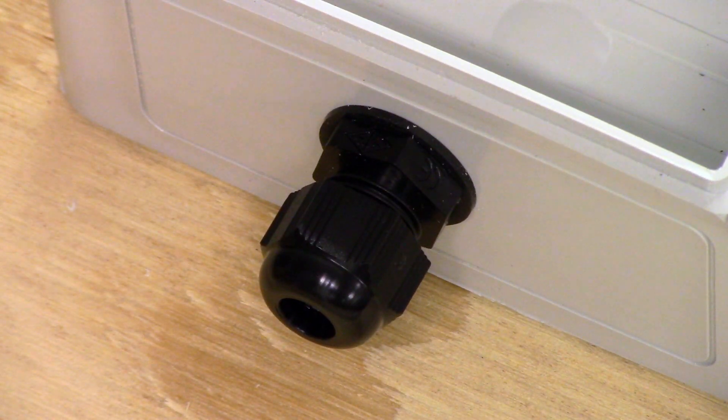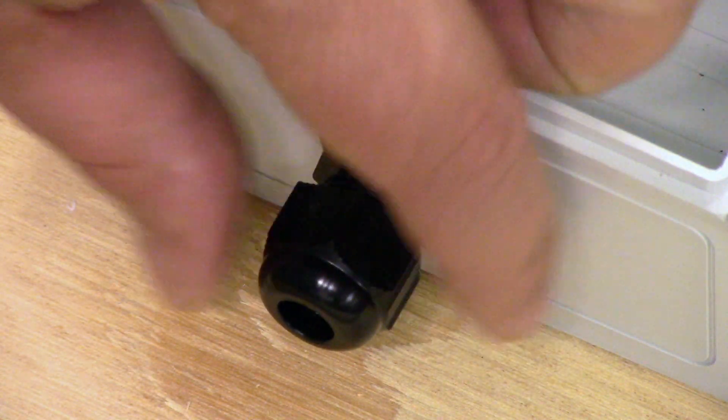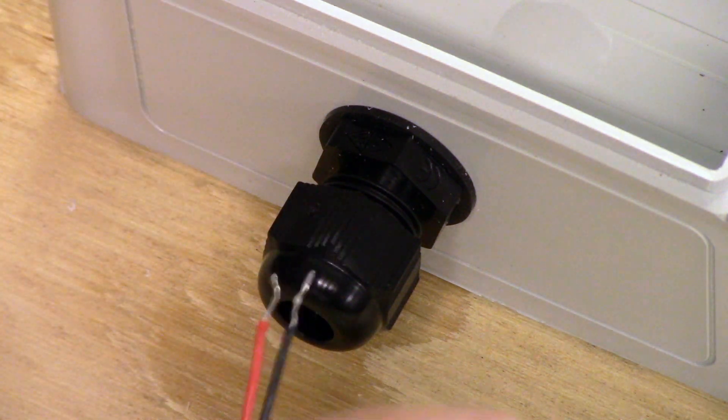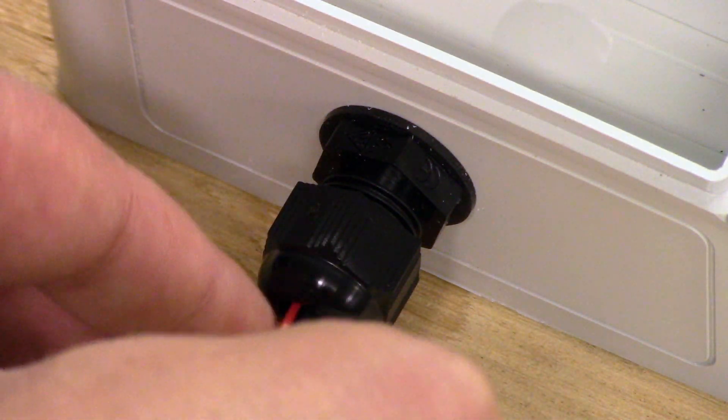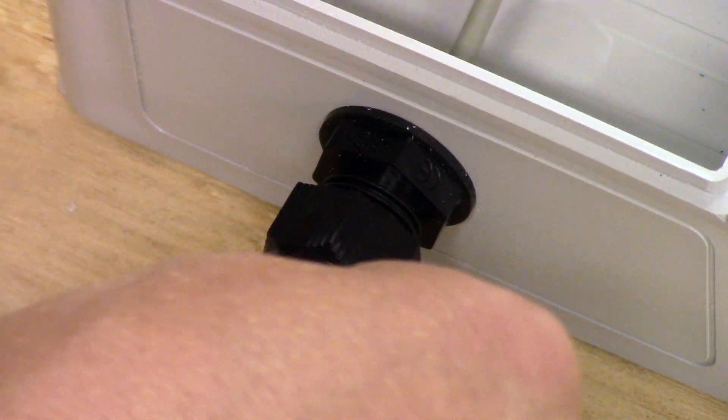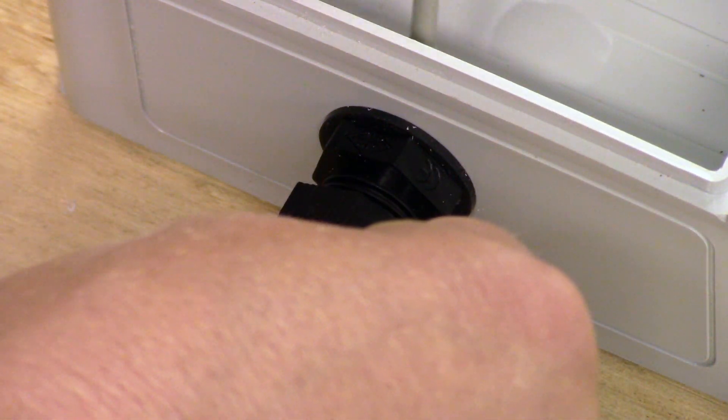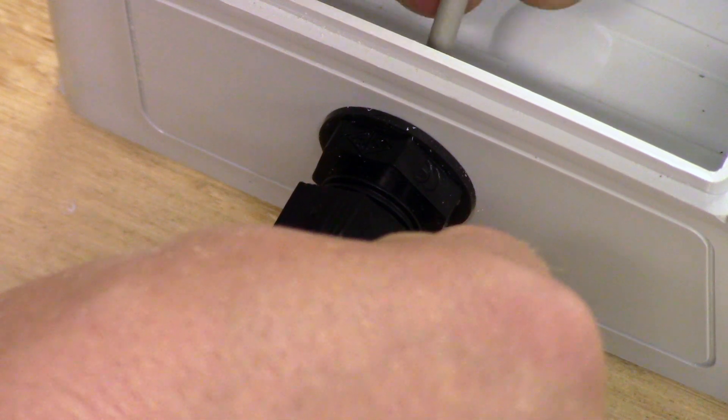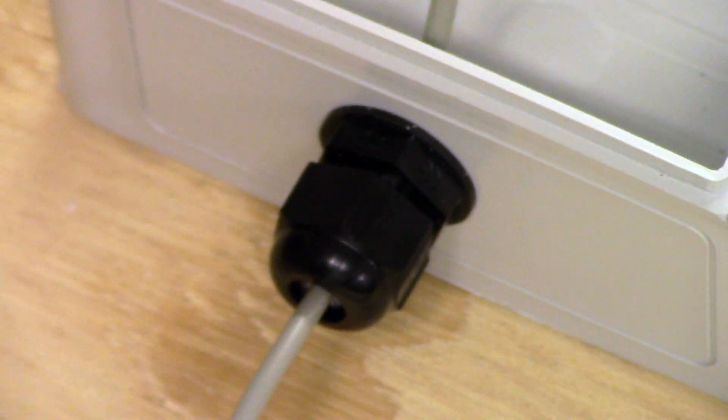Okay now to get the wire into the box make sure this is loose so that the orifice is as big as possible. Take the two wire cable stick it through. Give yourself about five inches of slack, maybe eight inches of slack, and when you tighten this up it pulls that seal down and grips the wire tightly.